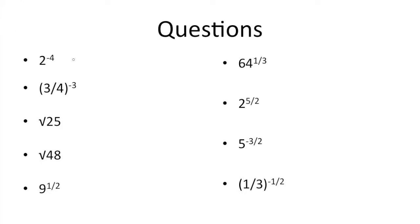So first off, we have 2 to the negative 4. If you remember, if we have a negative exponent, all you need to do is take the reciprocal of the base, which is 2, and the reciprocal is 1/2. And now since it's to the 4th power, we're going to have 1 over 2 to the 4th. That's because 1 to the 4th power is just 1, so we keep a 1 on top. And 2 to the 4th is 2 times 2, which is 4, times 2 is 8, times 2 is 16. So we get 1 over 16.